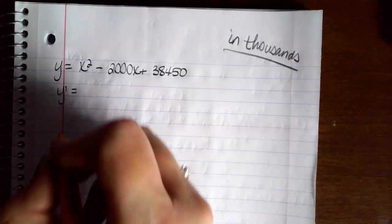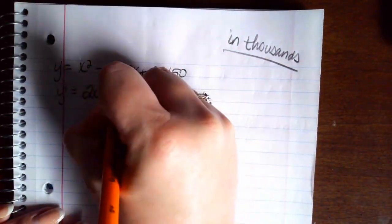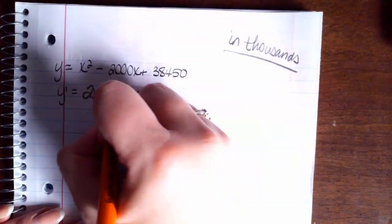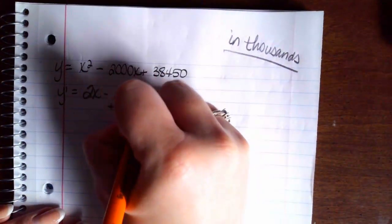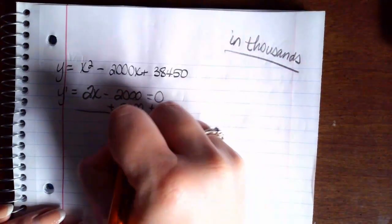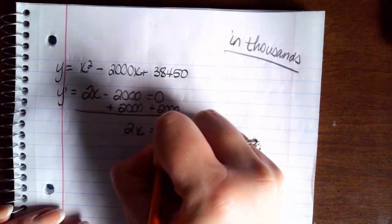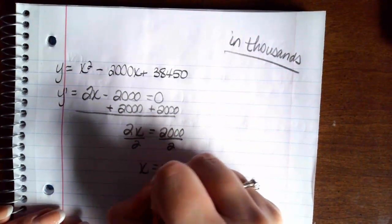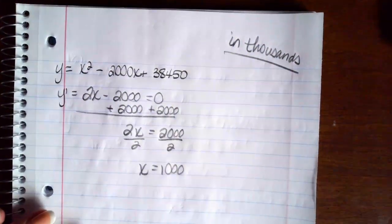So we're looking for a first derivative. So I have 2x minus 2,000 and we're going to set that equal to 0. We're going to add 2,000 to both sides. So we get 2x equals 2,000. Divide both sides by 2 and x equals 1,000.